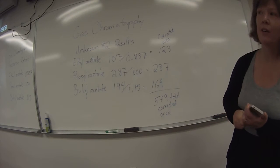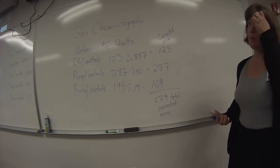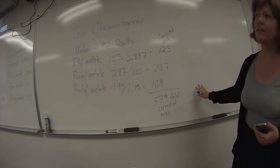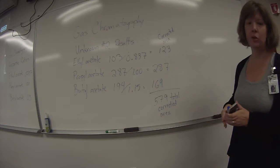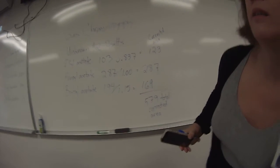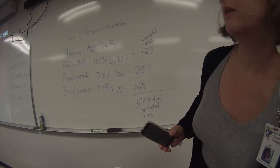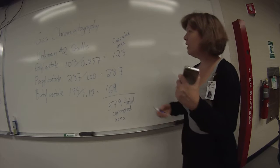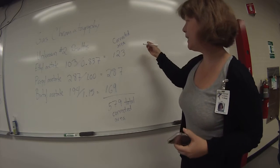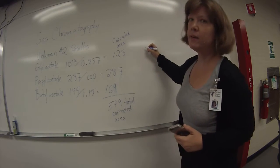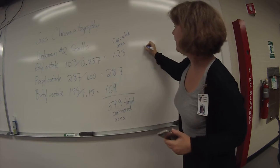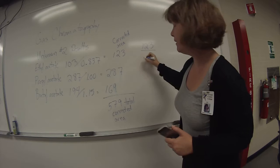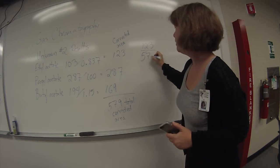Now we need to figure out the percent composition for each of the components using this total corrected area. So the percent of ethyl acetate in the mixture would be the area of ethyl acetate, 123, divided by the total corrected area, 579.